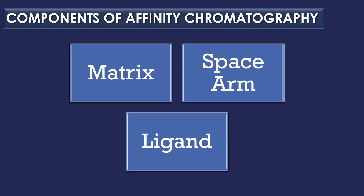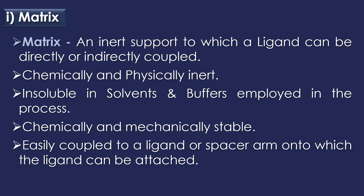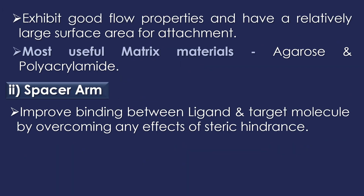There are three components of affinity chromatography: matrix, spacer arm, and ligand. The first component is matrix. Matrix is an inert support to which a ligand can be directly or indirectly coupled. For the matrix to be effective, it must be chemically and physically inert, insoluble in solvents and buffers used in the process, chemically and mechanically stable, easily coupled to a ligand or spacer arm, and must exhibit good flow properties with a relatively large surface area. The most useful matrix materials are agarose and polyacrylamide.